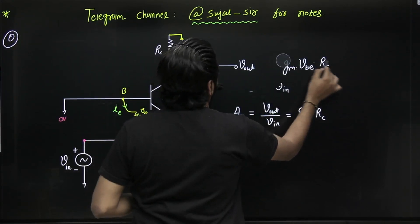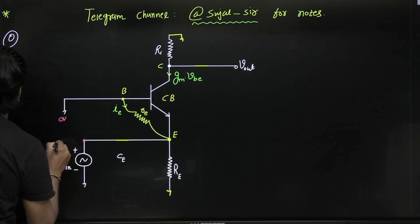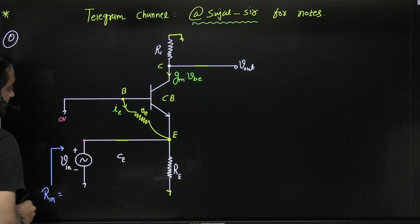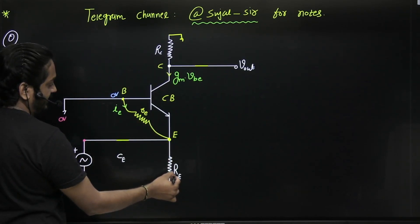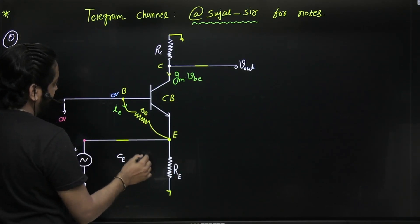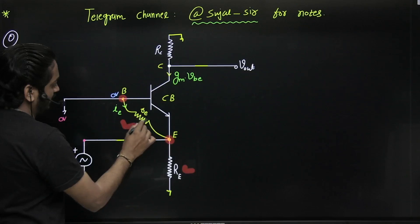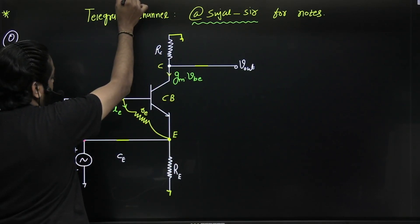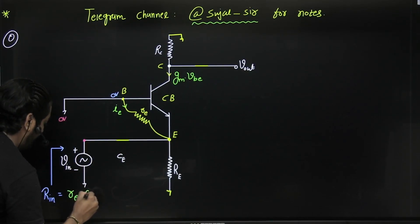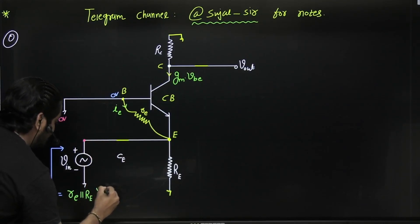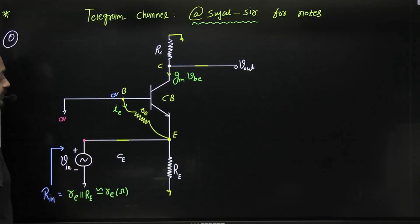The input impedance seen from the emitter side: the base is connected to ground (zero volts), so between the emitter and ground we have the small signal resistance r_e, and also the external emitter resistor R_E in parallel. Common base provides very small input impedance, approximately r_e in ohms — a very low input impedance.